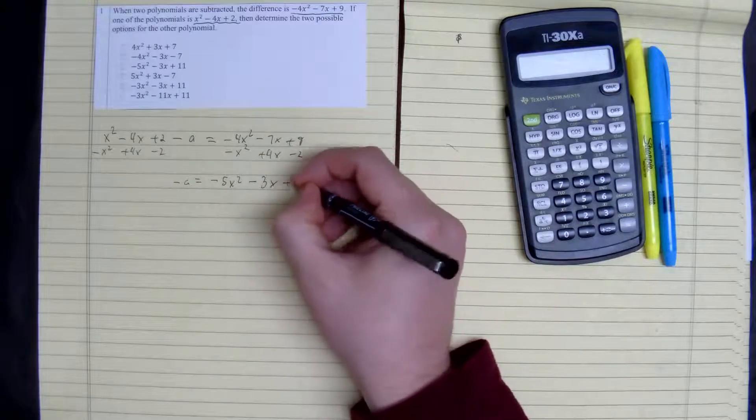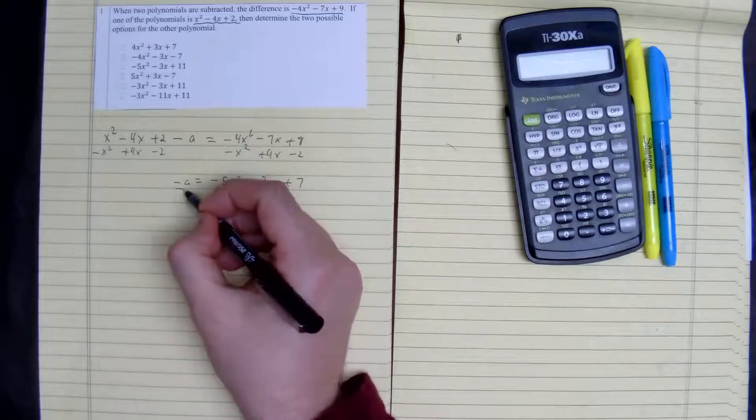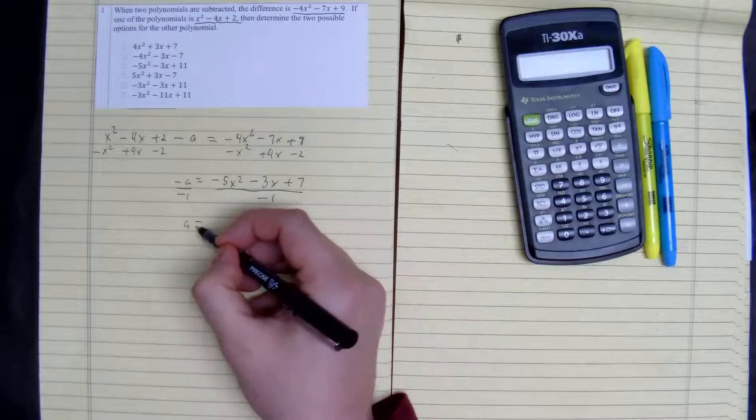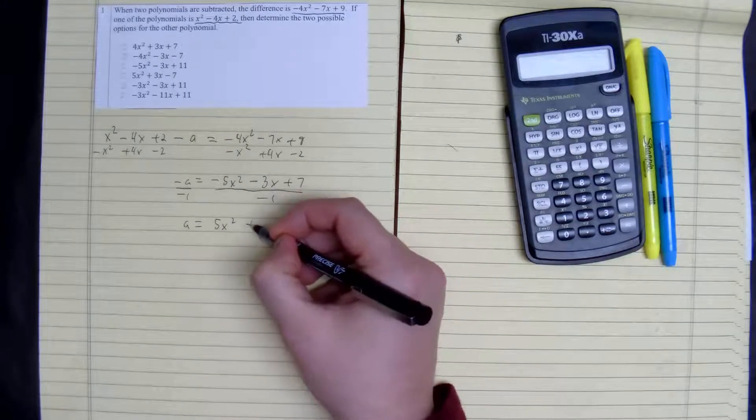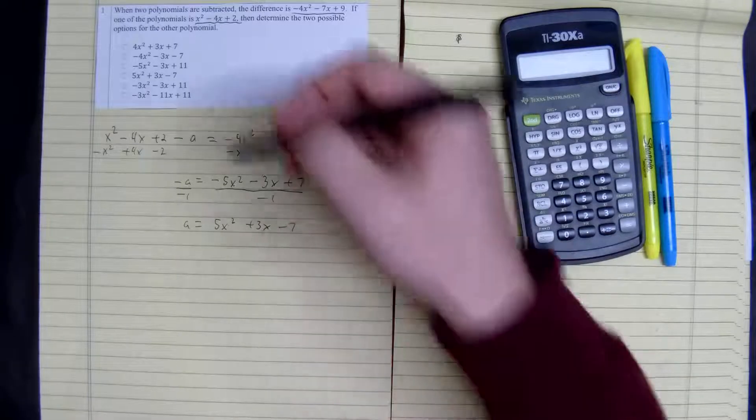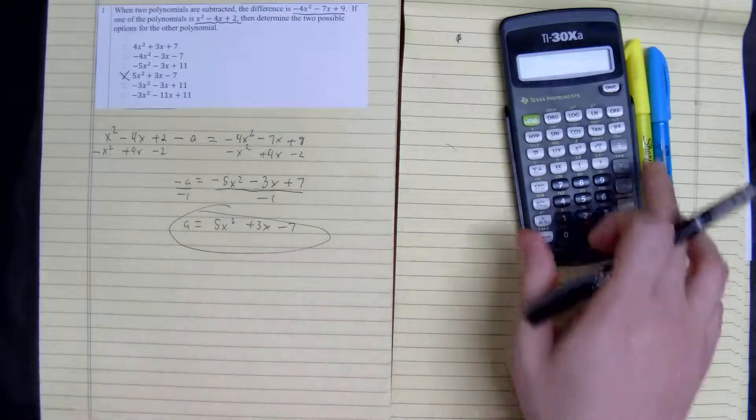To get equation by itself, we divide both sides by negative 1, so we just switch every sign. First equation is equal to 5x squared plus 3x minus 7. That's our first answer.